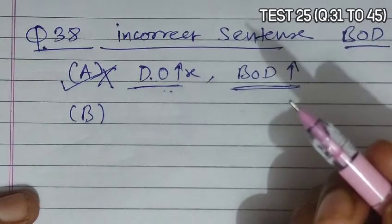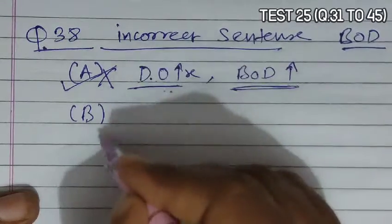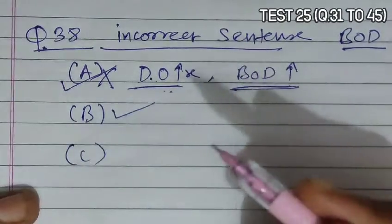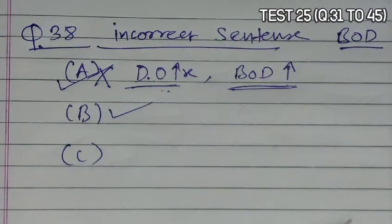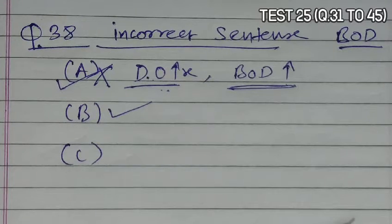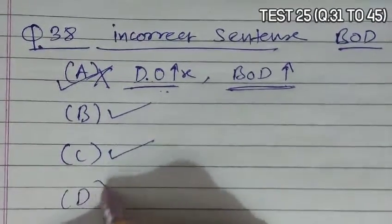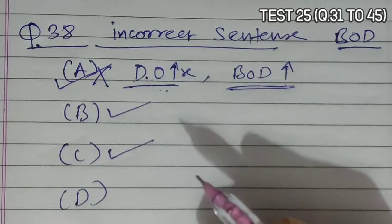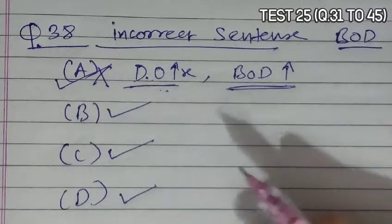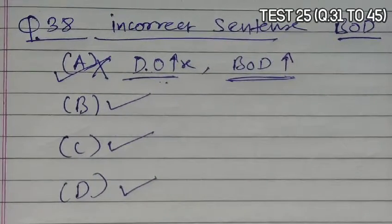Option B states it is possible to estimate the amount of biodegradable organic matter in sewage water by measuring the BOD — correct. Option C states that microorganisms involved in biodegradation of organic matter in the receiving water body consume a lot of oxygen, resulting in a sharp decline in dissolved oxygen downstream from the point of sewage discharge — correct. Option D states that decline in dissolved oxygen in water causes mortality of fish and other aquatic creatures — correct. So A is the incorrect statement.